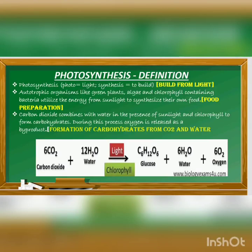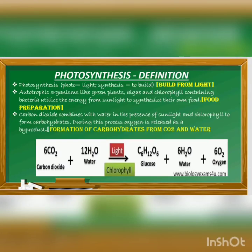The second definition: the green parts of plants using sunlight, carbon dioxide, and water to prepare their own food — this food preparation in plants is called photosynthesis. The third definition: formation of carbohydrate from carbon dioxide and water using sunlight as energy. So very simply, you have three definitions: build from light, food preparation, and formation of carbohydrates.